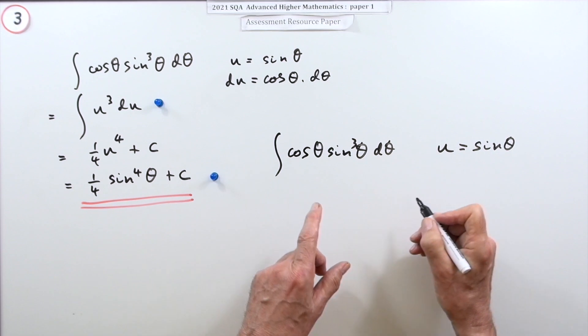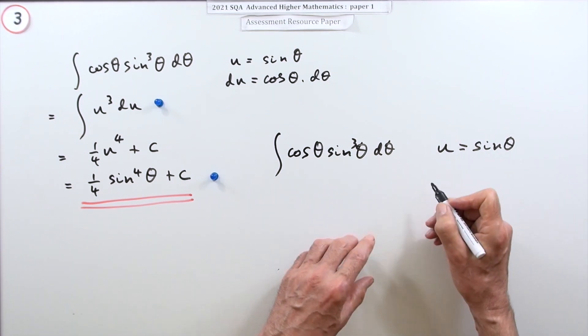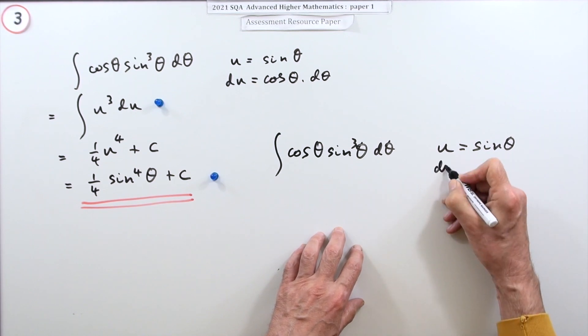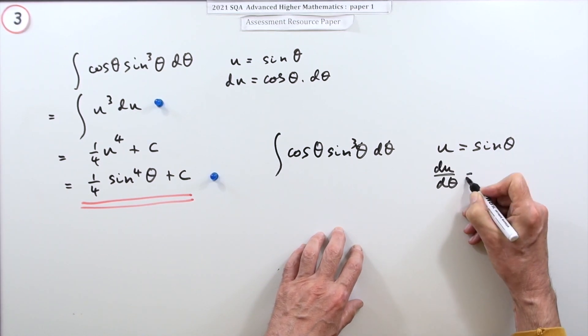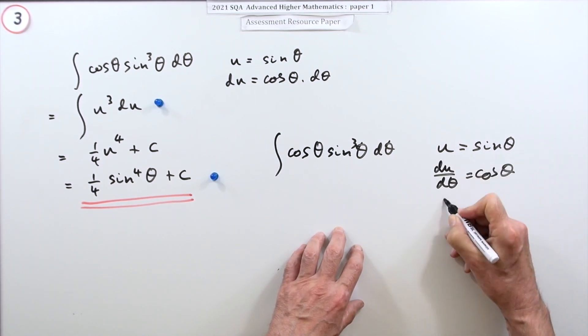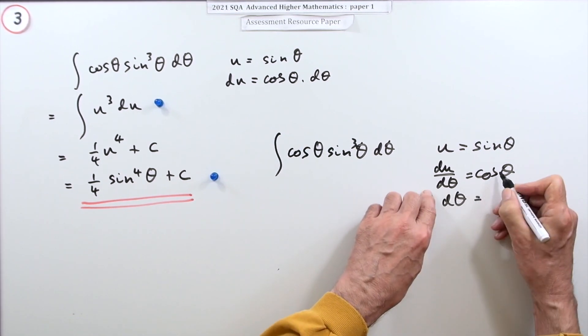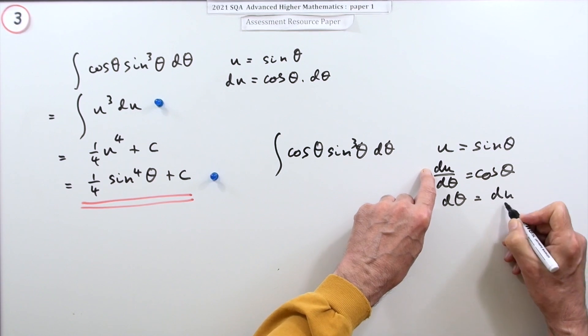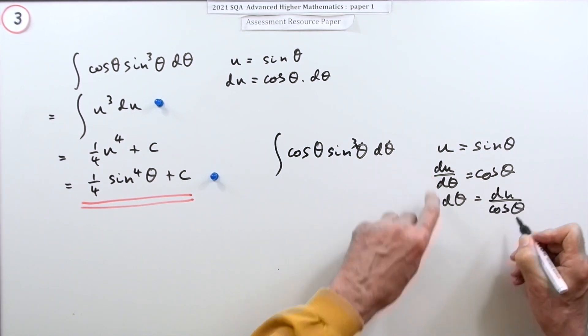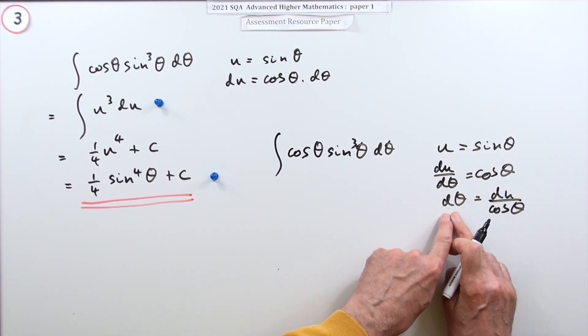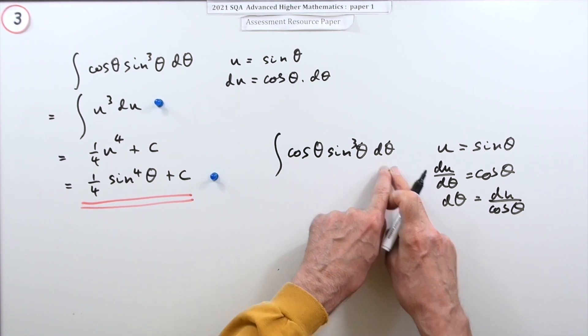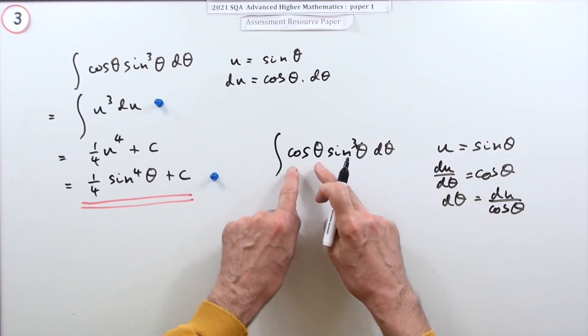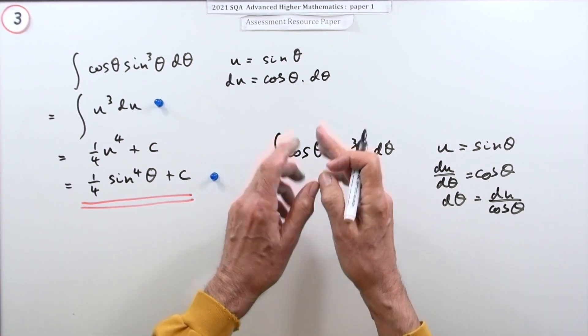Then you might prefer to do this because it would be more straightforward if you like, without having to search for bits. You would say, well, just differentiate that the way you know: du by d theta is cos theta, so you can rearrange it to say that d theta can be replaced by du over cos theta. Now I've got direct substitutions. I don't want this, so I can put that instead. I don't want this, so I can put that instead.